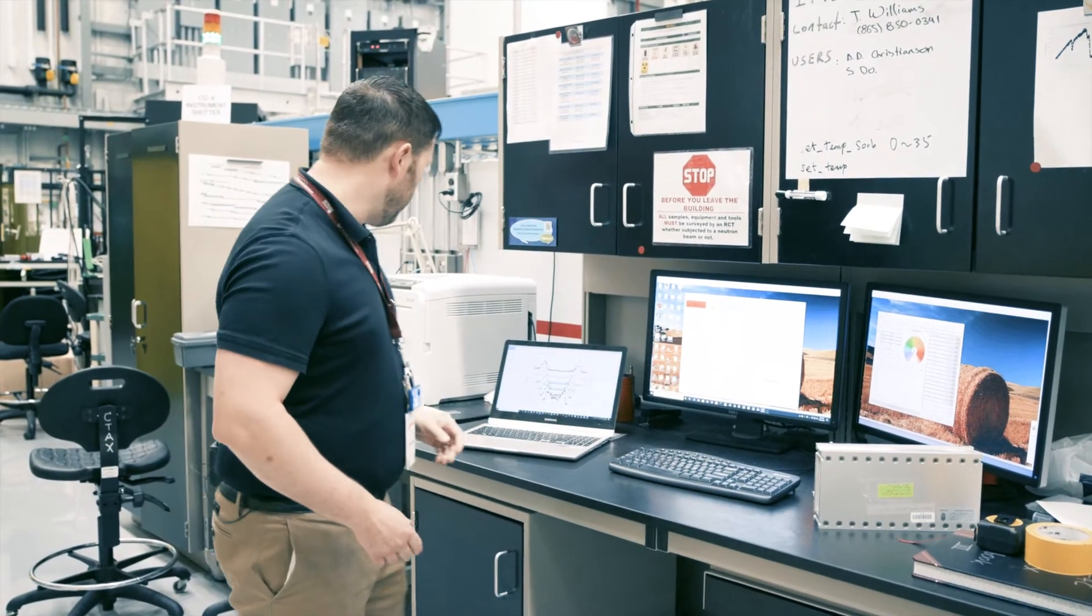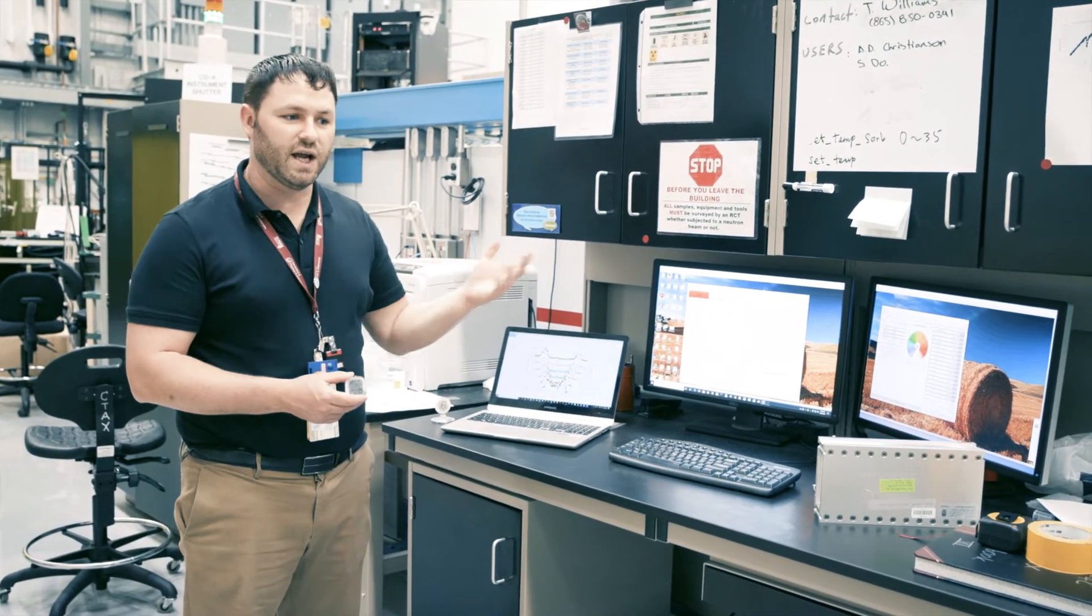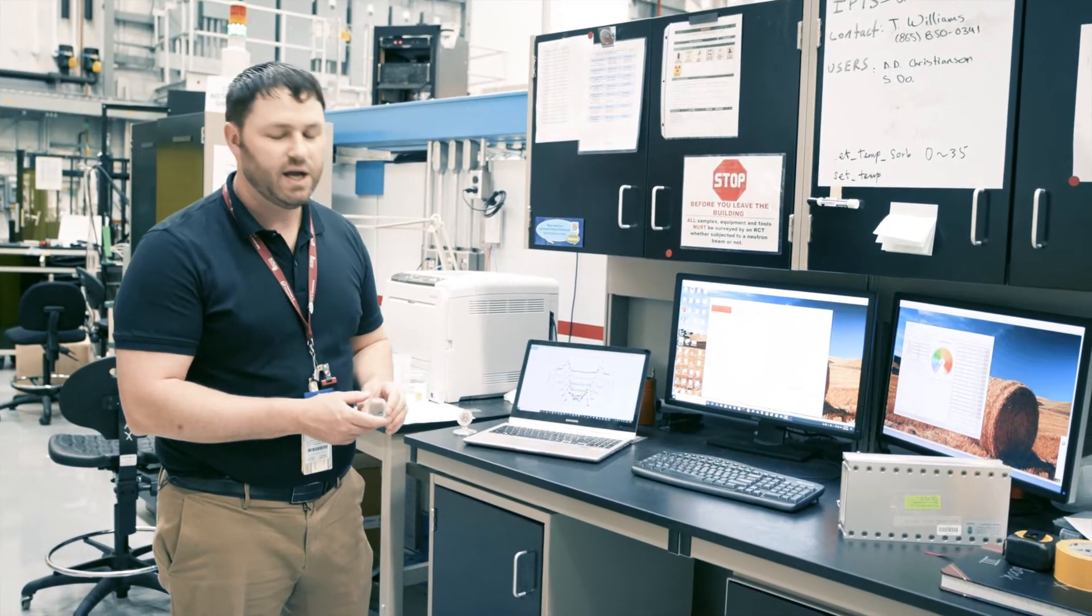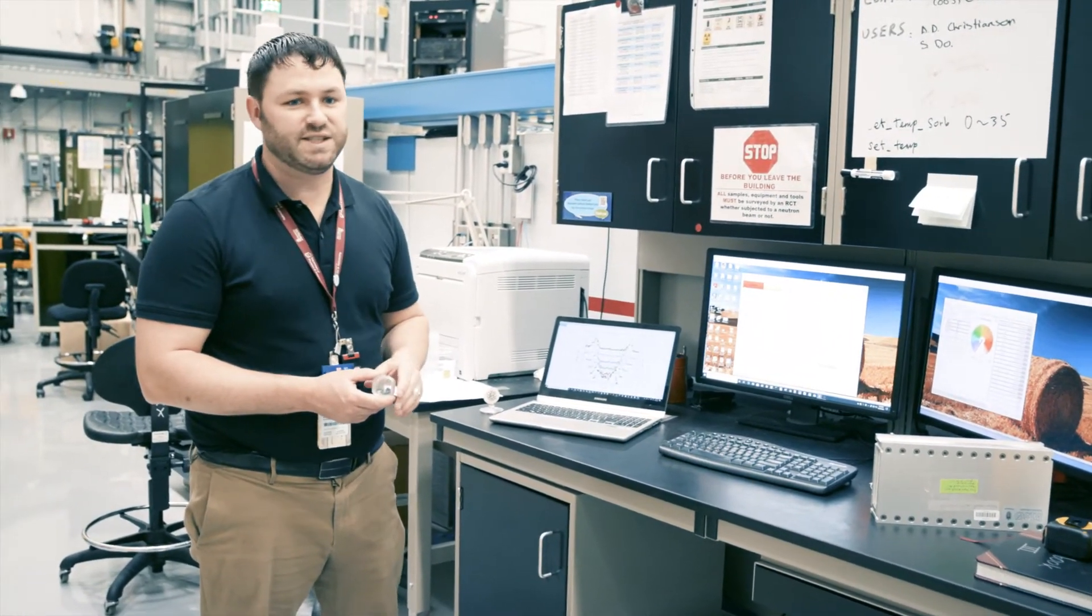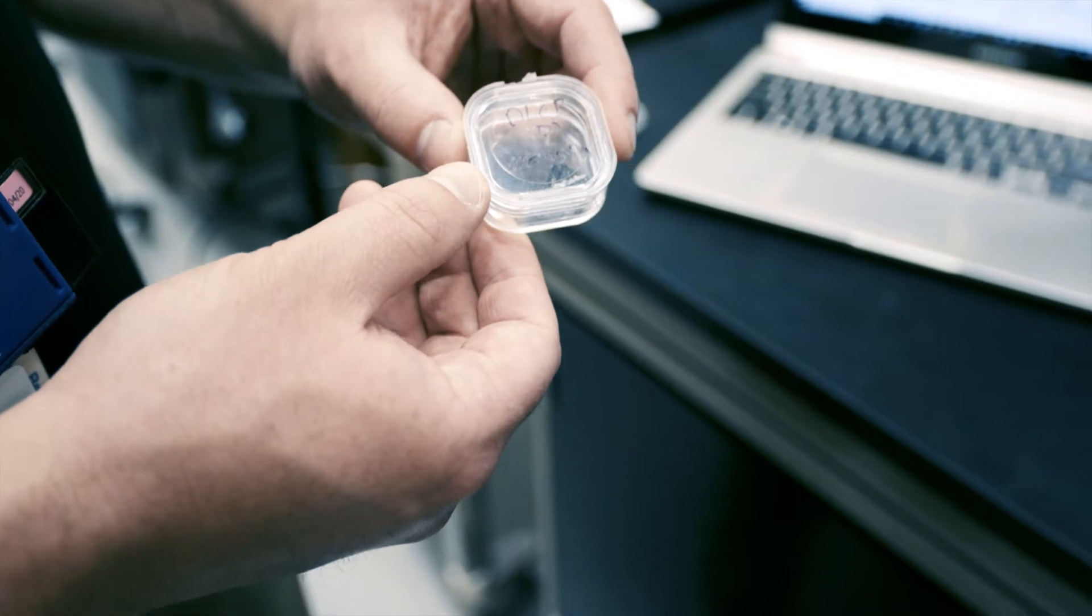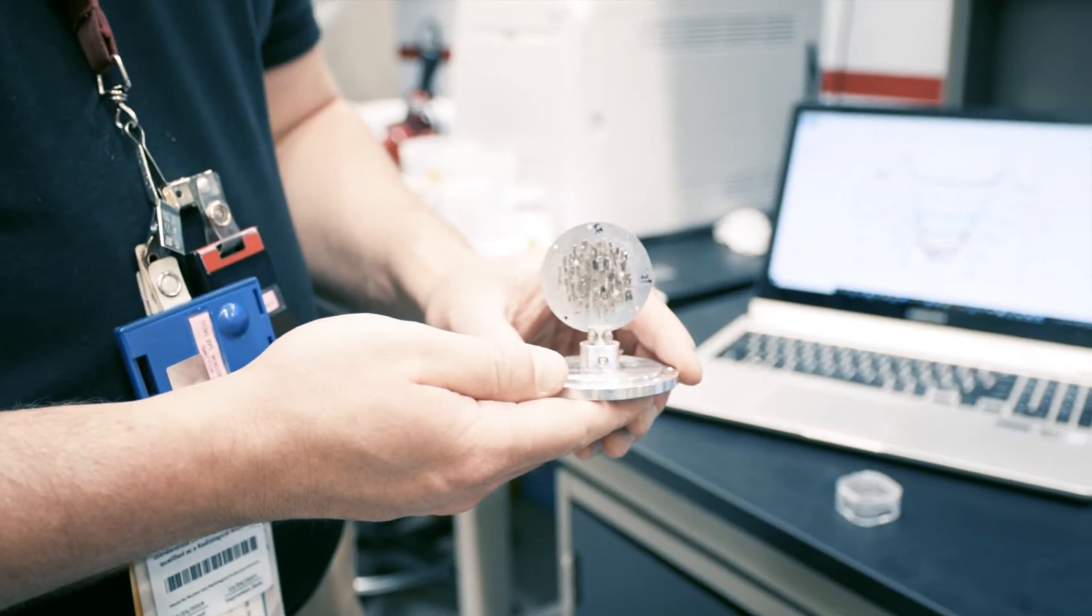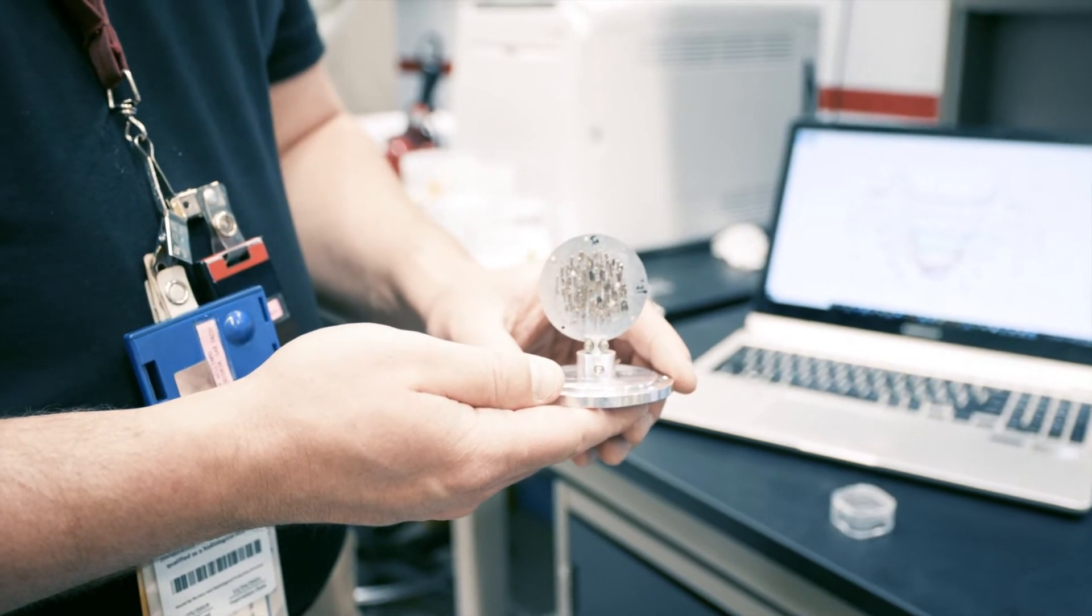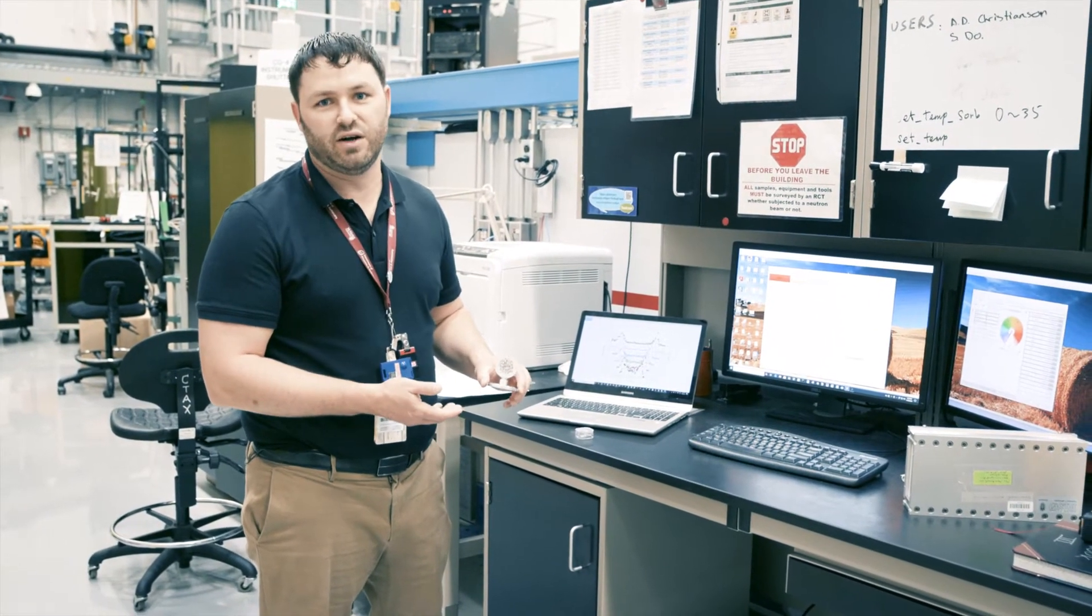Now, the crystals that we measure are generally single crystals because we're looking at different points in Q energy space. Elastic signals tend to be quite strong, but inelastic signals can be thousands of times weaker. So we need very large single crystals to measure, or we need to co-align a bunch of small crystals like this to get the signal that we need to measure the inelastic signal.